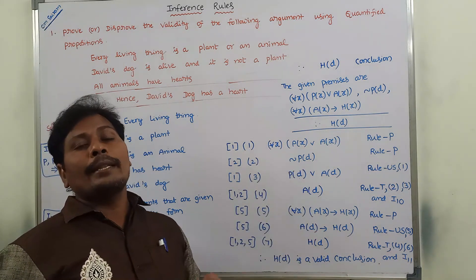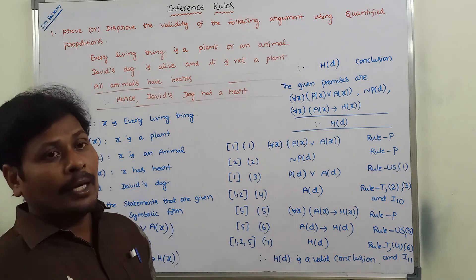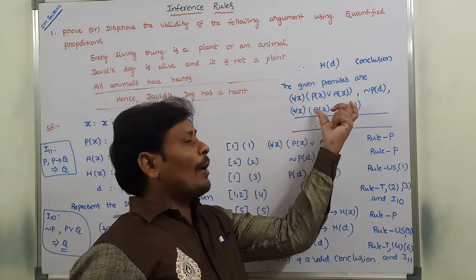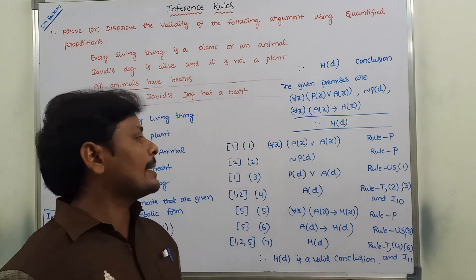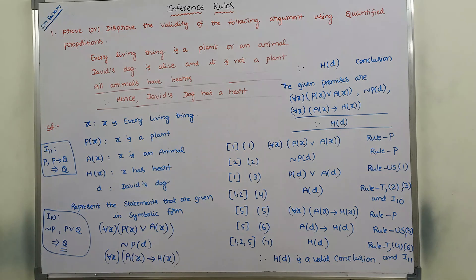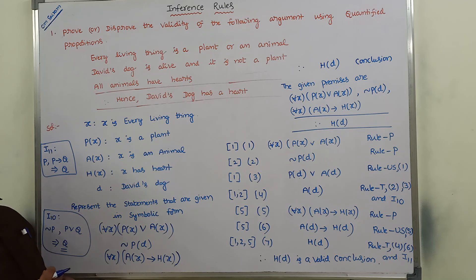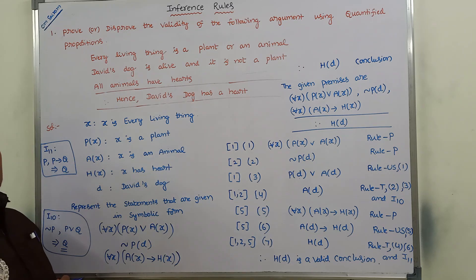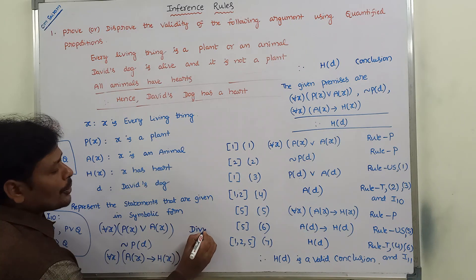These quantified propositions derive this conclusion, hence we can say it is a valid conclusion. First, the given statements are written in terms of predicates; then using those predicates, the quantified propositions are converted to symbolic form; then inference rules are applied to derive and verify the conclusion. Thank you all for watching this video. If you like this video, please click the like button and share it with your friends and classmates. If you have any doubts, please put them in the comment section and I will clarify them. Please subscribe to my YouTube channel.